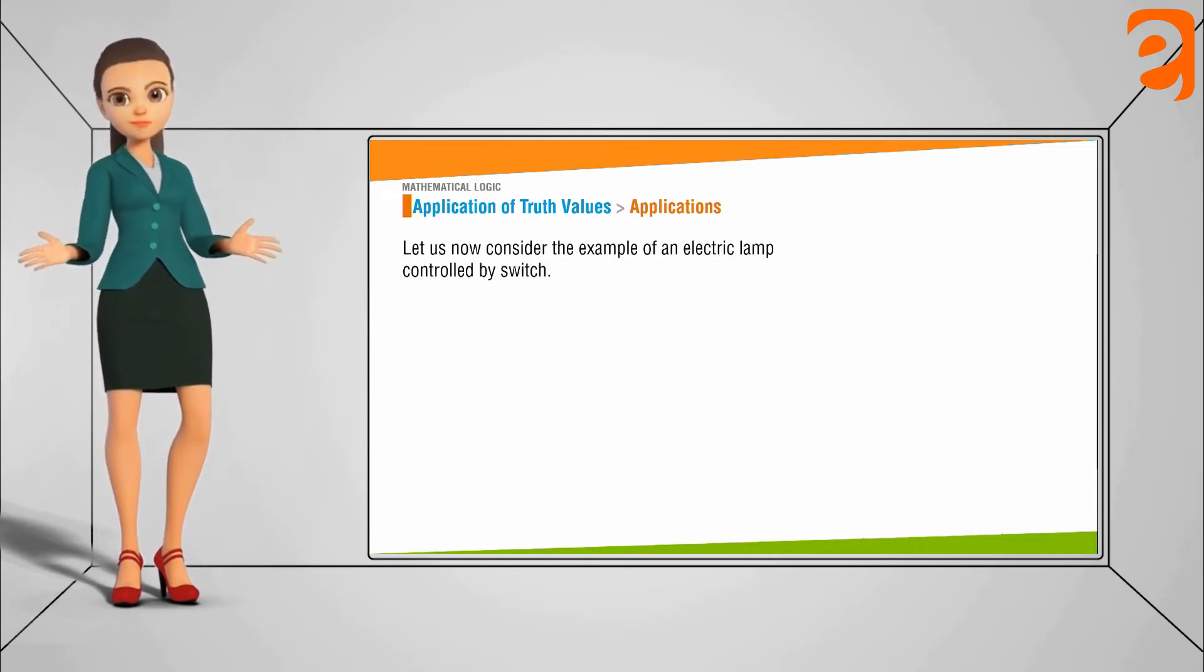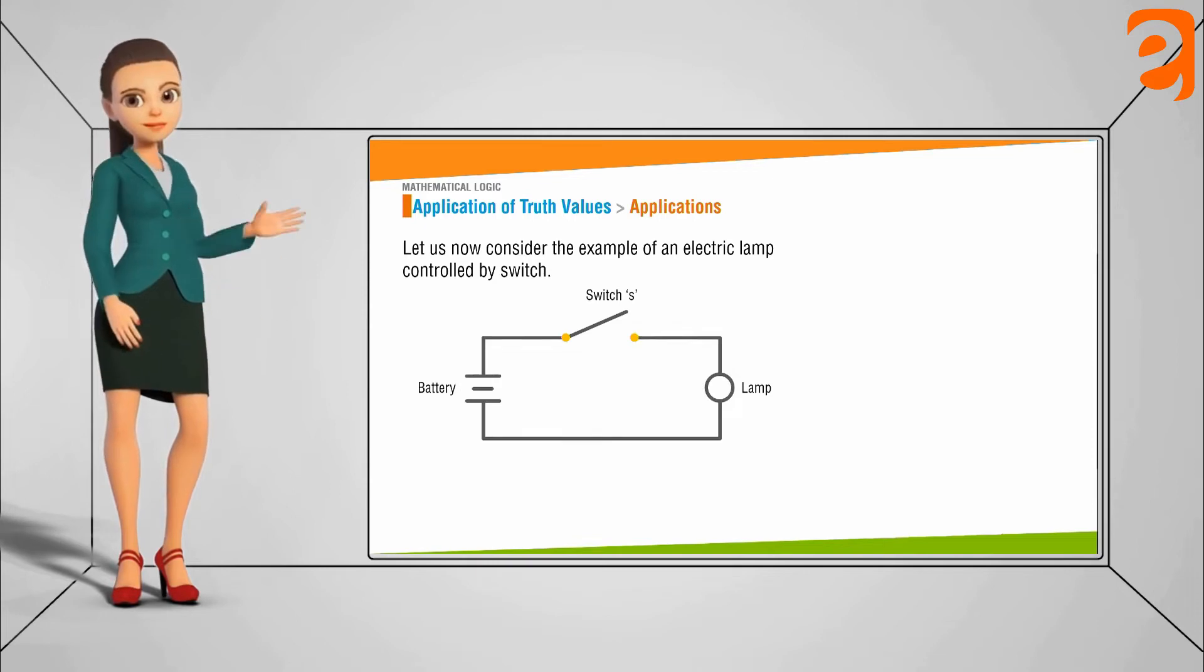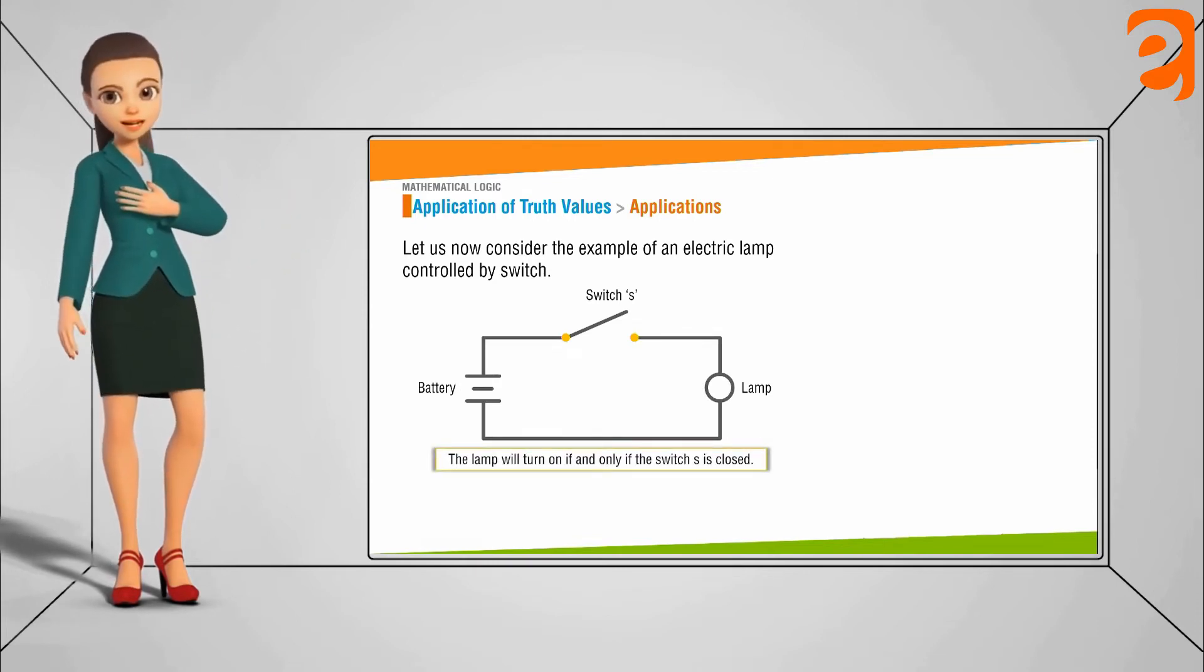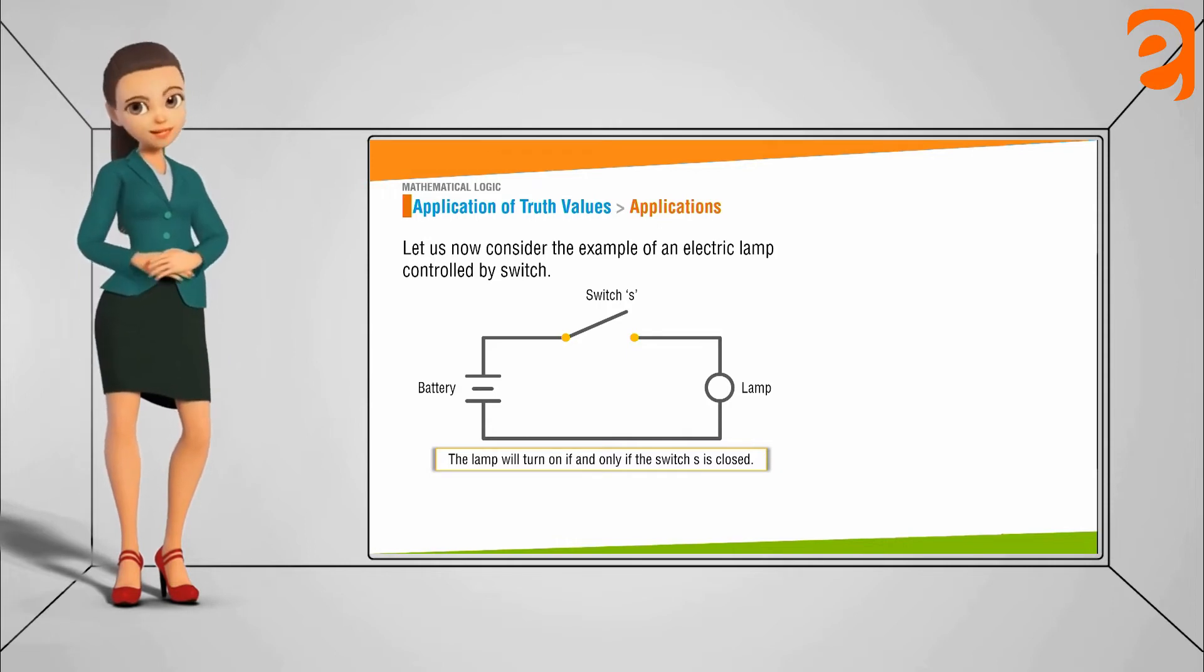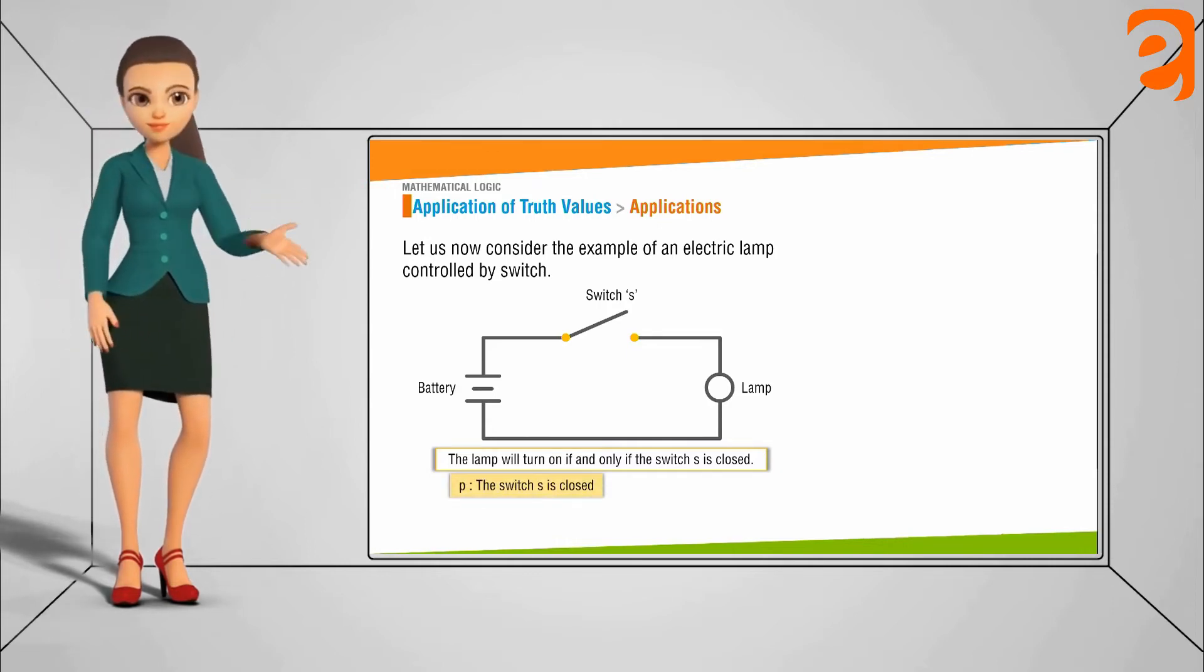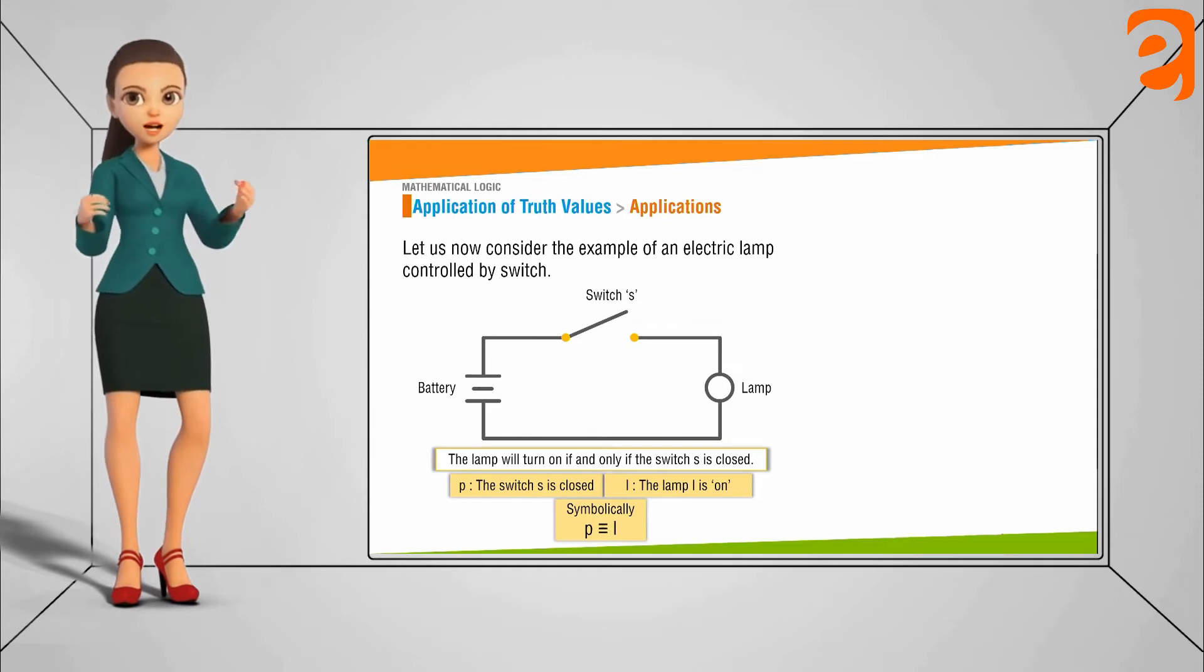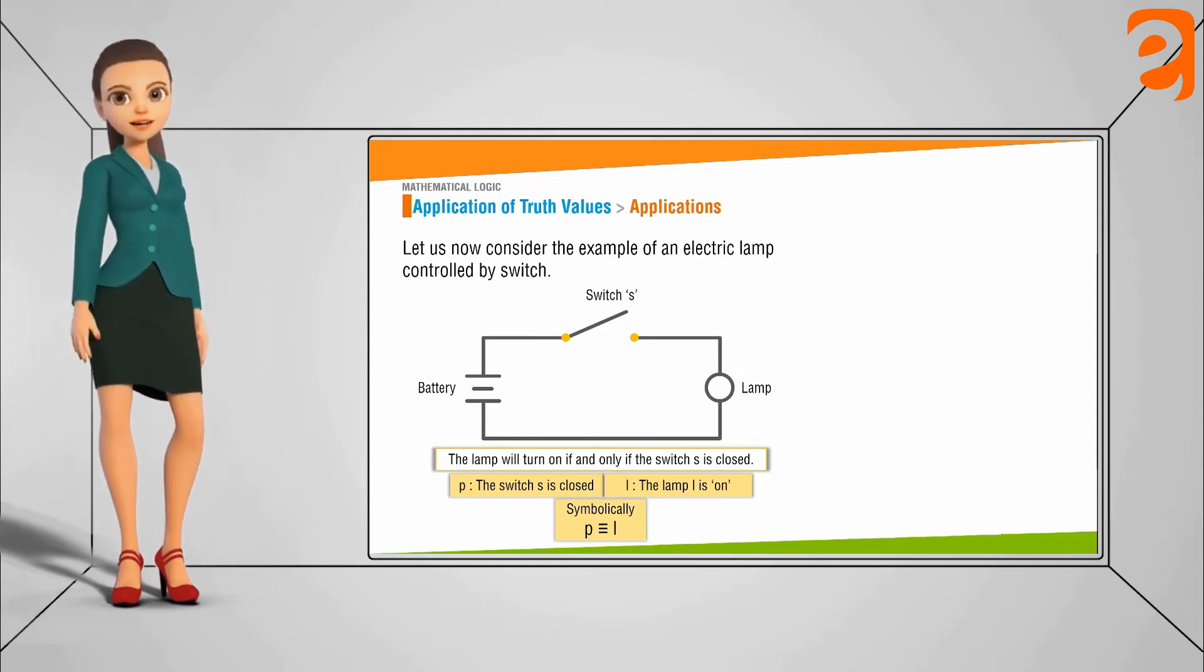Let us now consider example of electric lamp controlled by the switch. Here you can see that the lamp will turn on if and only the switch S is closed. So if P is a statement that switch S is closed, L is the statement that the lamp L is on, then symbolically P is equivalent to L.